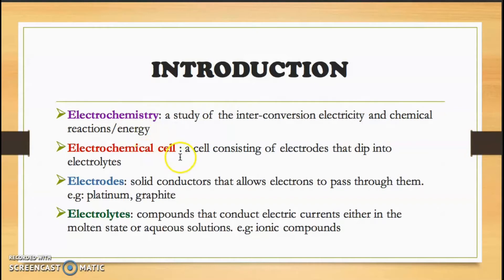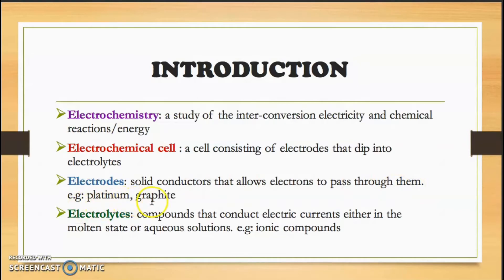An electrochemical cell is a cell consisting of electrodes that dip into electrolytes. An electrode is a solid conductor that allows electrons to pass through it — for example, platinum and graphite. Electrolytes are compounds that conduct electric currents, either in the molten state or aqueous solution, such as ionic compounds.